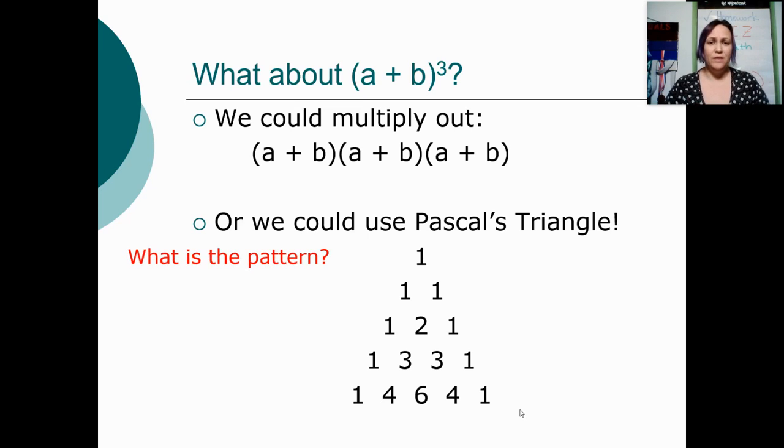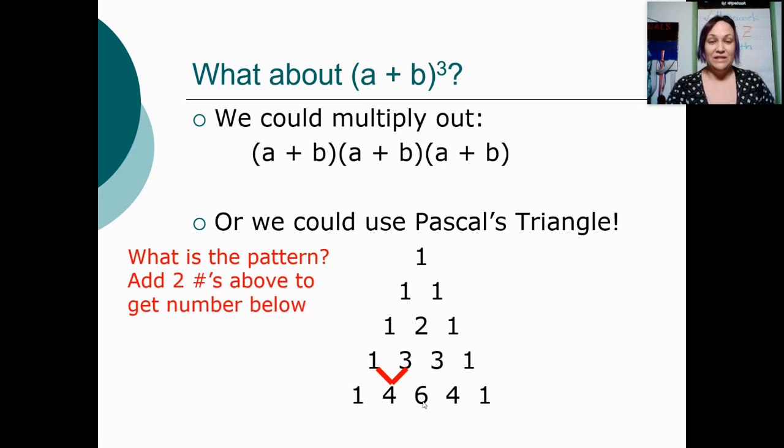So what is the pattern? How can we create Pascal's Triangle? Because this is something that you can create on your own. You don't have to memorize it. You can remake it every time that you need to use it, like on a test or a quiz. The pattern is that we're going to take the two numbers above and add them together to get the number below. For instance, to get this four down here, I added this one and this three. To get the six, I added the three and the three. So that's why the numbers are a little bit offset.